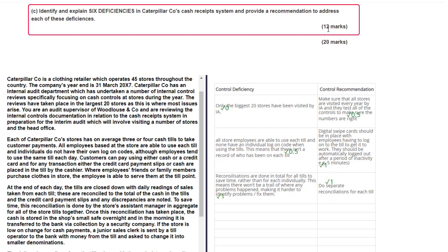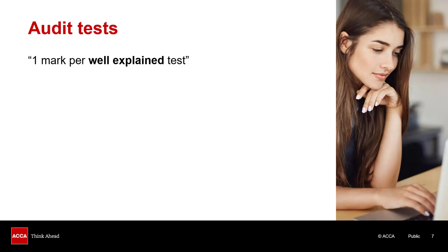So that's four out of 12. It seems like I've been a bit harsh, but the question asked for six deficiencies and this student only picked out three — by not writing enough points, they're again limiting the marks available. On to our third and final type of question that commonly comes up in the AA exam: generating audit tests.